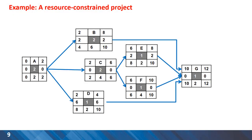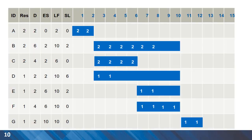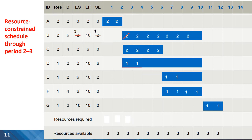Here is an example that we can apply the three priority rules on. You can see here is a small project with seven activities. The completion date for this project is 12 days. You can have the Gantt chart for the project activities with resource requirements marked on each bar — this is a very good visual aid for resource leveling. The available number of resources for this project will be a maximum of three, as illustrated in the bottom row of this table.